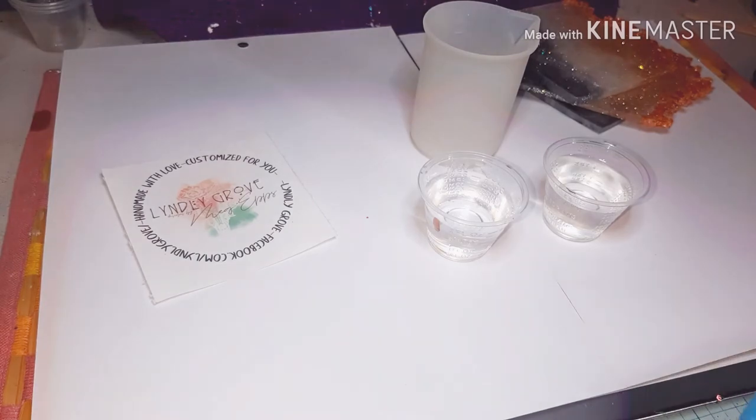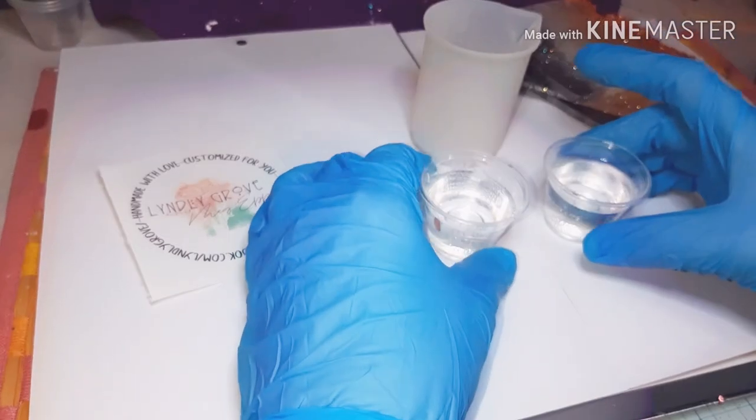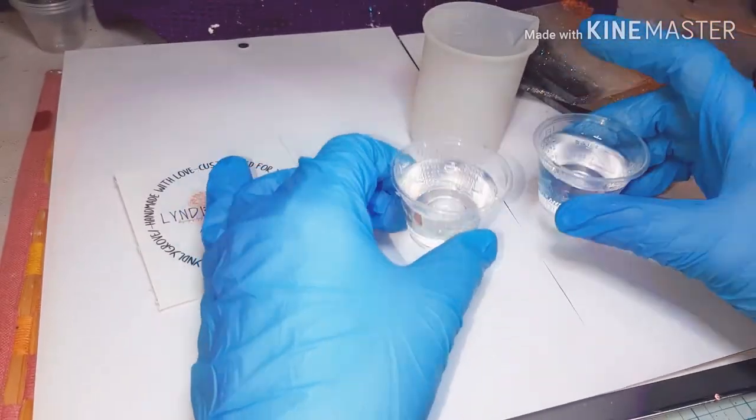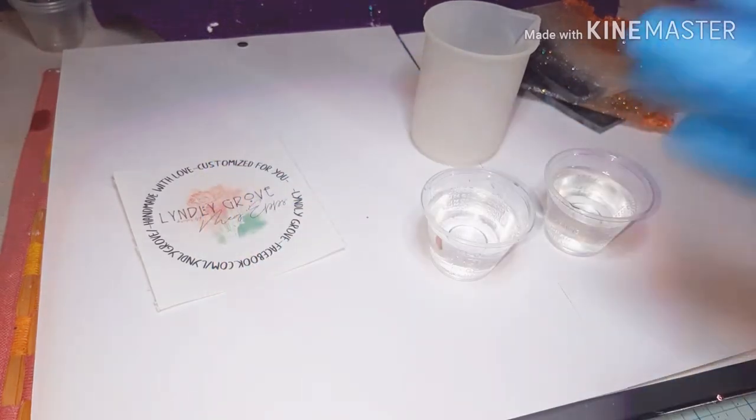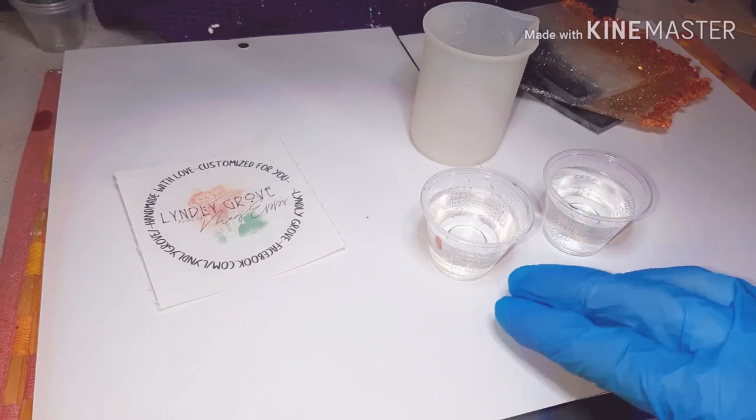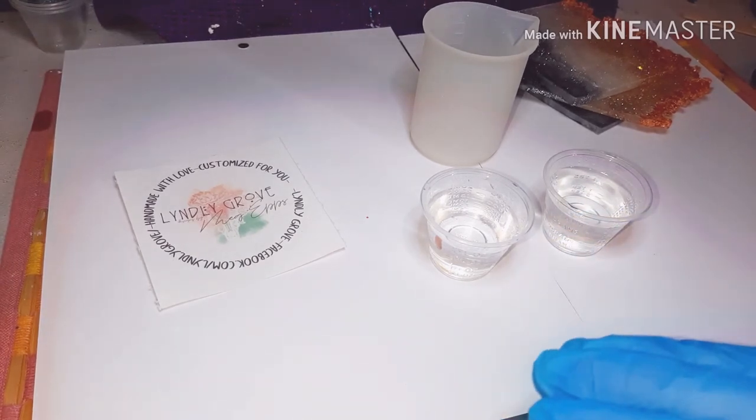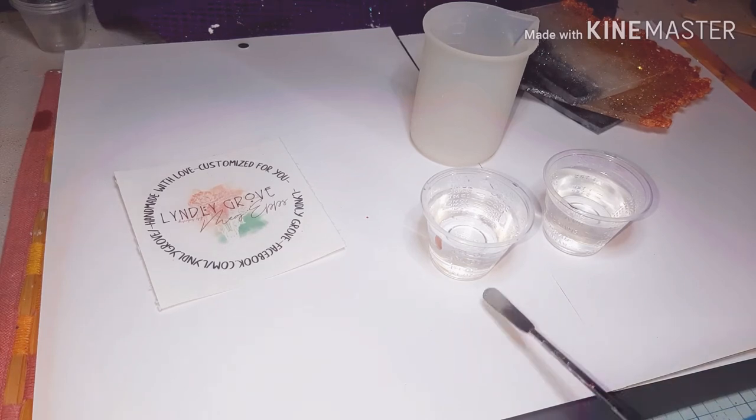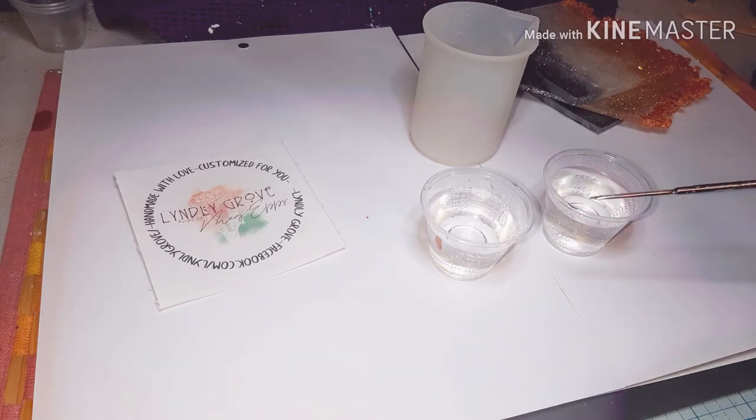So I've already gone ahead and I've measured out my part A and my part B. You want to make sure that you're measuring to a one-to-one ratio, meaning you want to make sure that each part A and part B measures out to be the exact same number. So I have about 20 mls in this bottle and a cup and 20 mls in that cup. So equaling them both together, adding them, it will add up to 40 mls total of epoxy that we'll be using on our project today.